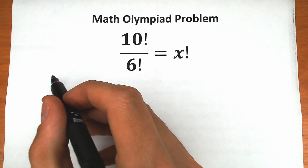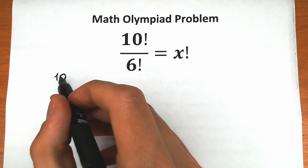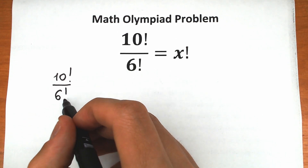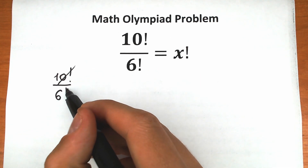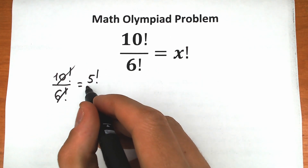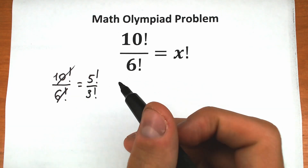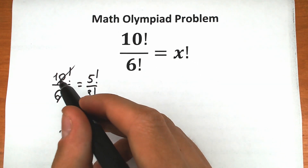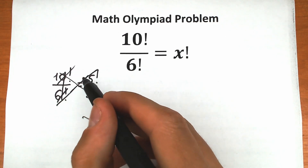A lot of students solve this question incorrectly. They say we have 10 factorial divided by 6 factorial, so let's cancel numerator and denominator by 2. As a result, they get 5 factorial over 3 factorial and simplify from there. But in terms of factorial, it doesn't work like that. So forget about this really bad solution.